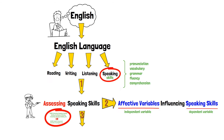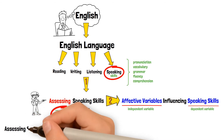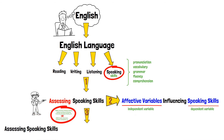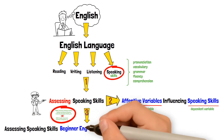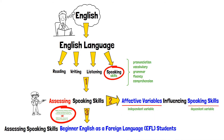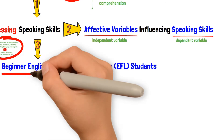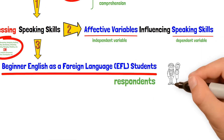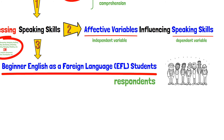3. Write the subject. Write the participants or respondents of the research. You can describe them in detail in your research methodology, like how you determine the sample population and their profile.